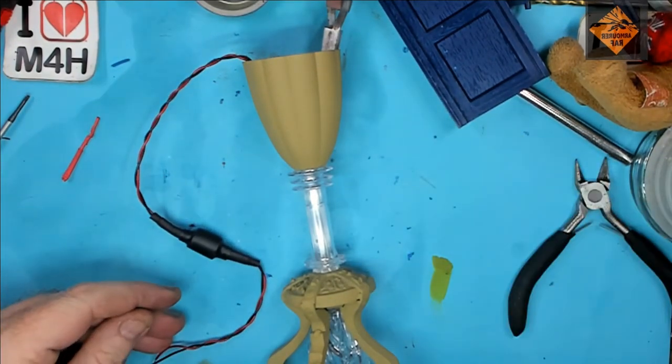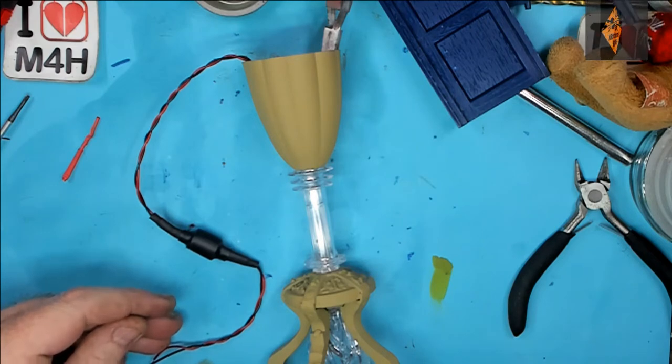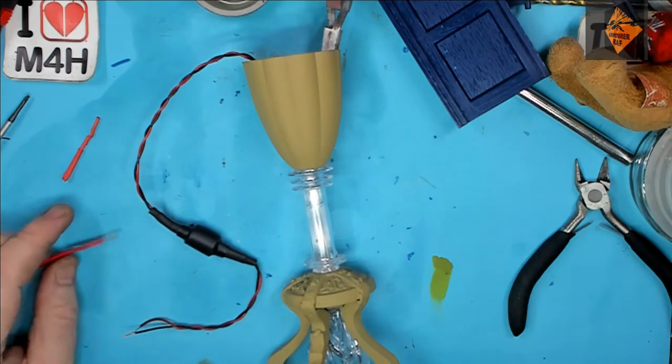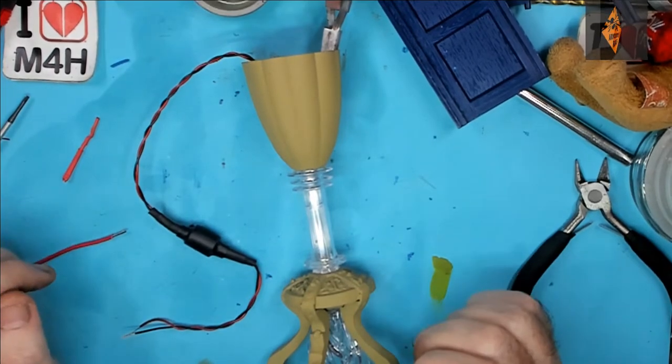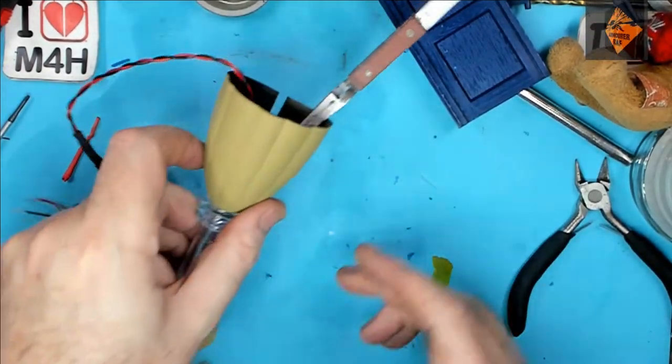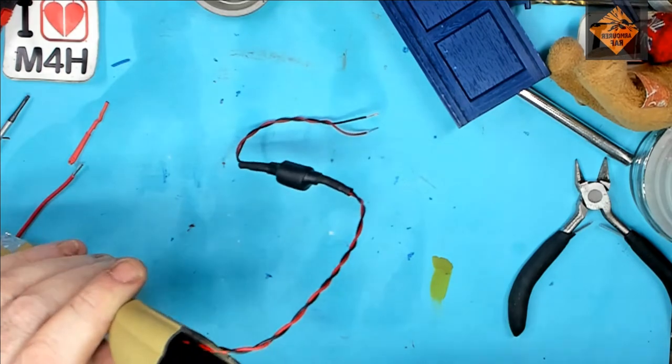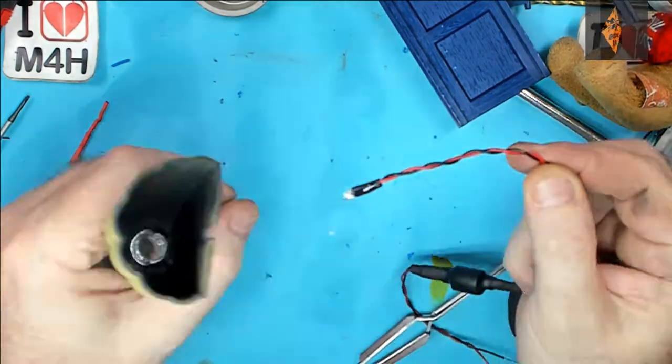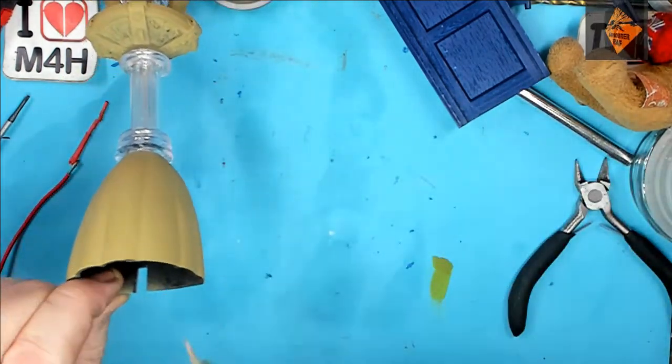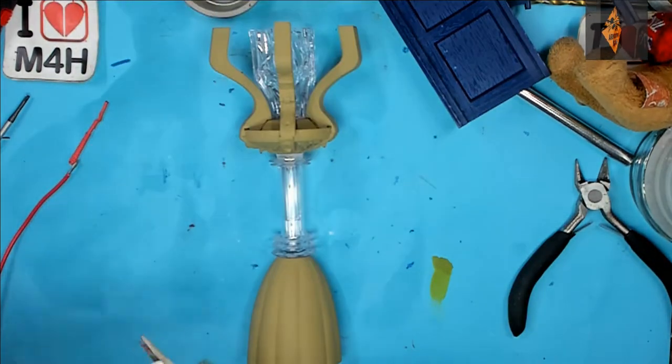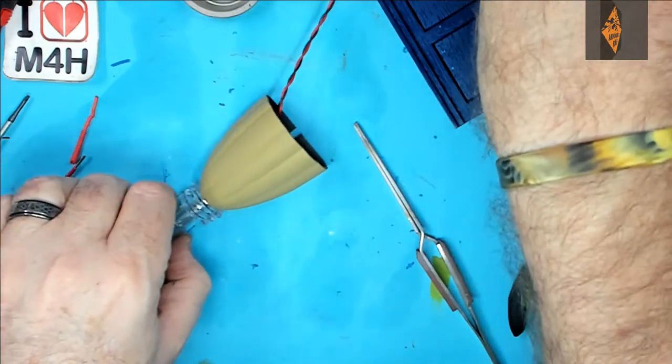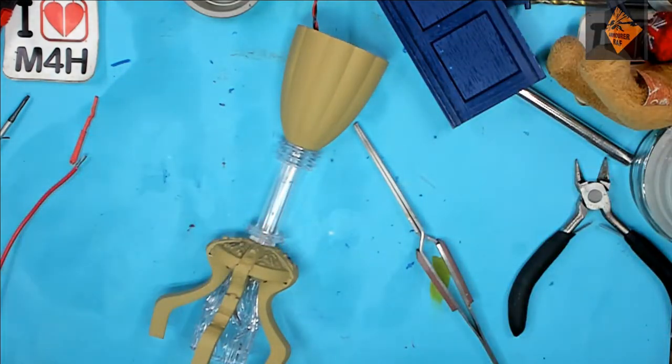You may not notice it, but I tend to test the circuit after every section. This saves a lot of heartache if you finish and it doesn't work, finding out where you broke it. Test, test, and test. Great. There we have the pulsing light glued in place.